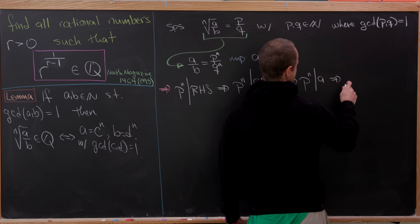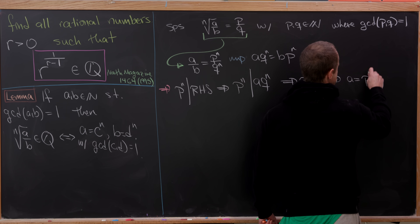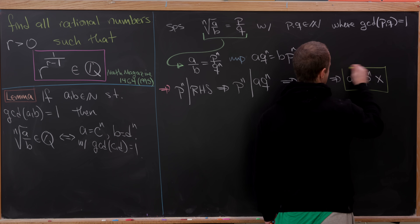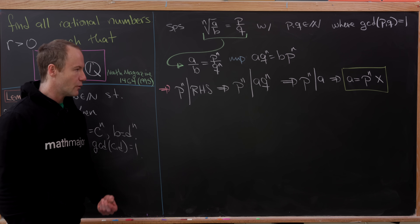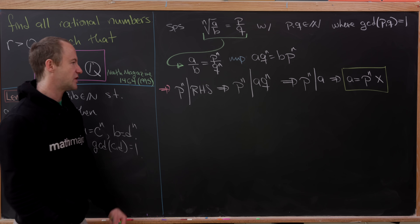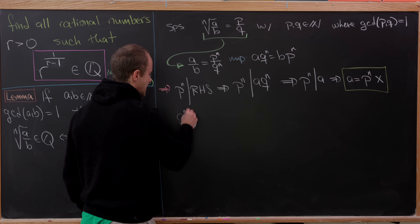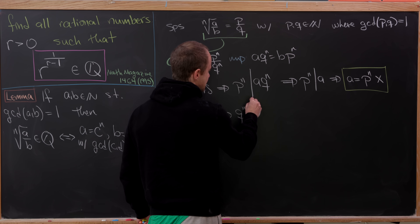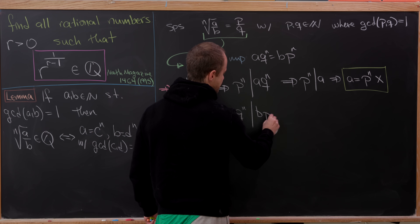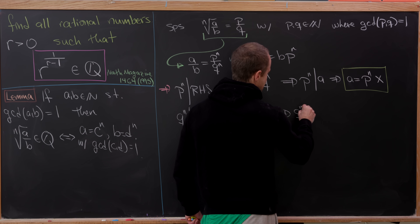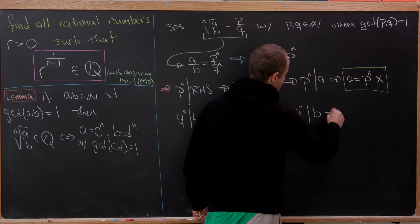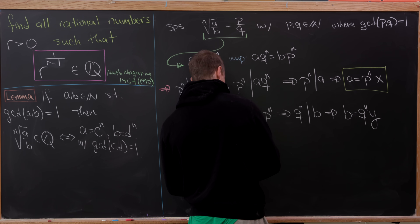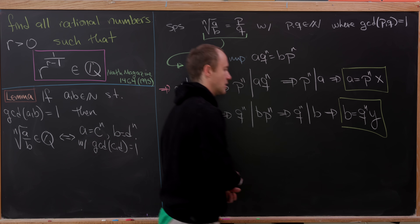That means a is equal to p to the n times x, for some natural number x. Now we play the same game with q to the n: q to the n divides the left-hand side, so q to the n divides b times p to the n, meaning q to the n divides b. So b is equal to q to the n times y, by essentially the same argument.